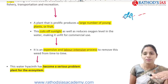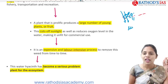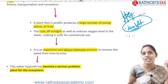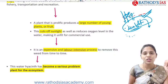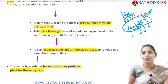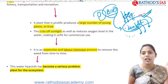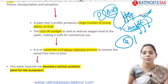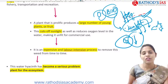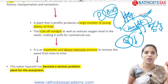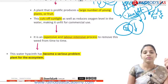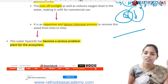Because water hyacinth floats on the water surface, it does not allow sunlight to penetrate. Water plants inside the water do not get enough sunlight, leading to their death. When these plants die and decompose, they require a large amount of oxygen, so BOD — biological oxygen demand — becomes very high and the oxygen content in the water decreases. Aquatic animals do not get enough oxygen and face suffocation.